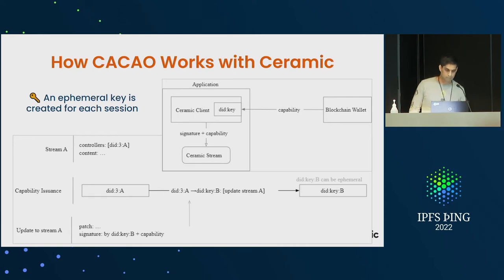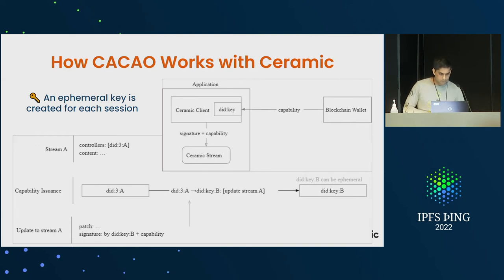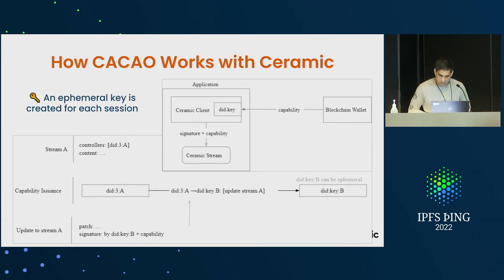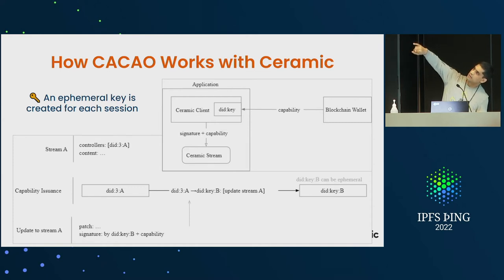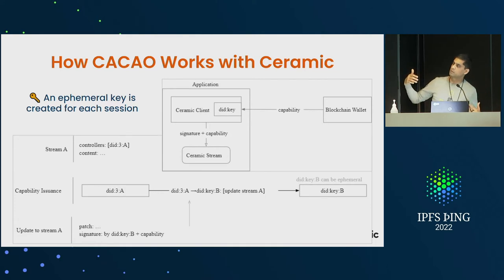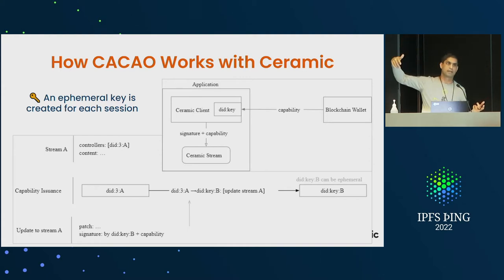Essential to that is Ceramic's concept of streams, which is just an IPLD DAG. An update to a Ceramic stream is a DAG-JWS object stored using the DAG-JOSE codec in IPLD. In the normal flow, a blockchain wallet provides a capability to an application. The DID key is a session key — it can be ephemeral. An application generates an ephemeral key, and the user's authorization is used to sign a capability — the CACAO — which gets stored in IPLD.